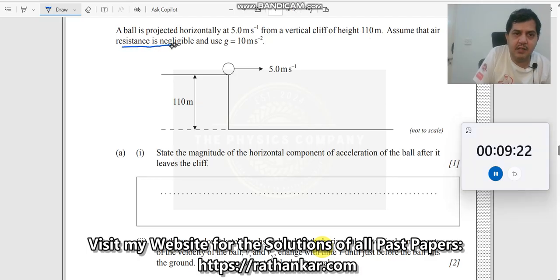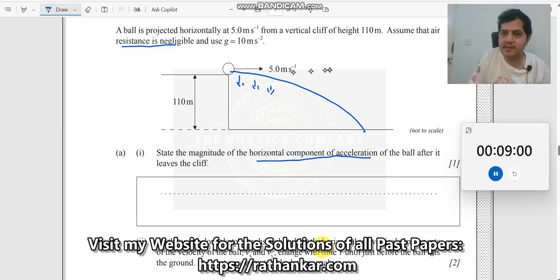State the magnitude of the horizontal component of acceleration of the ball after it leaves the cliff. Gravity is the only acceleration, the only force which makes the ball to undergo motion like this. It keeps on pulling it down while there is no acceleration along the horizontal direction.